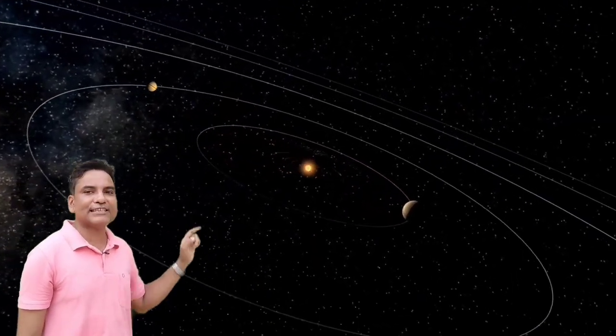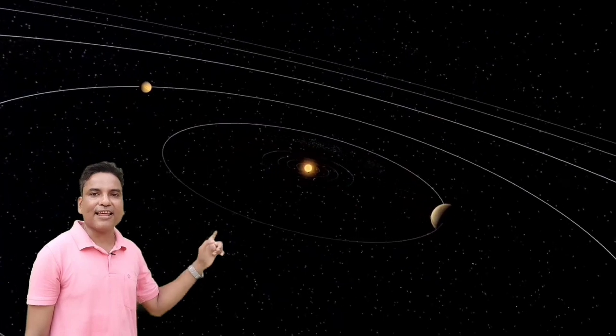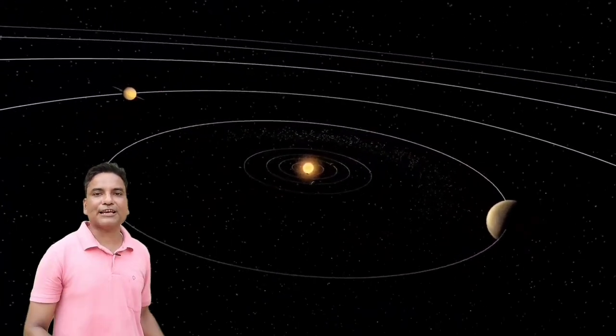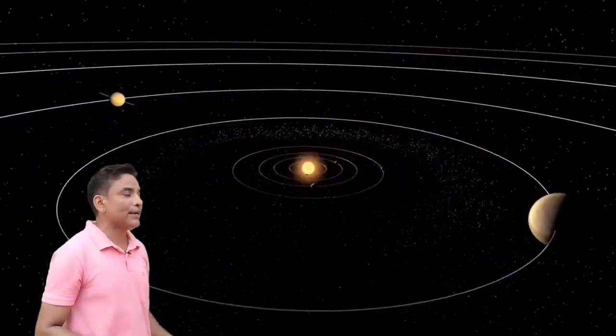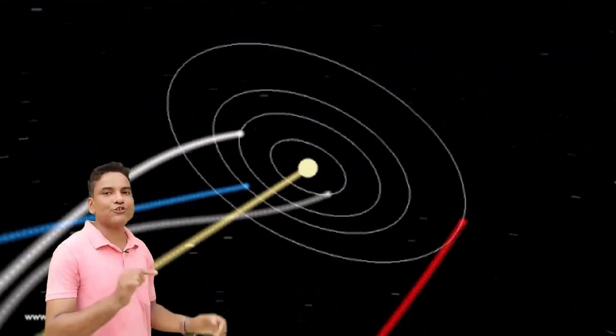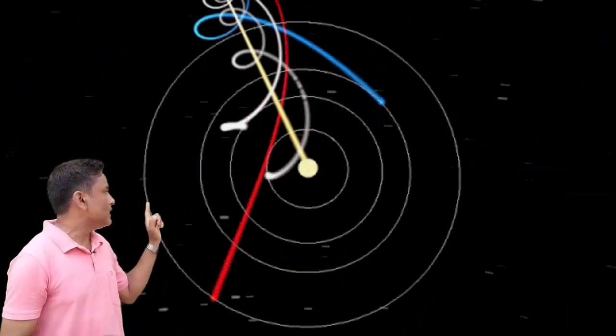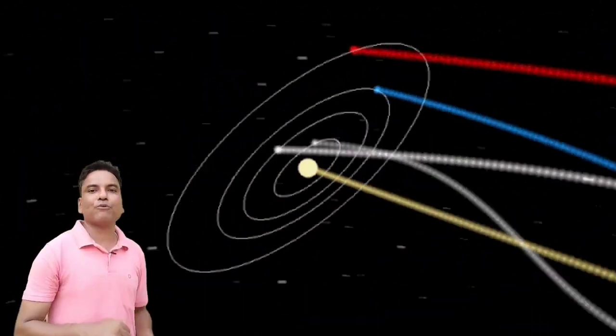Actually, our solar system does not exist in single plane like this. Our solar system makes 60 degree angle with Milky Way galaxy. Now, if we have rotated this model into 60 degrees, then we can see the actual motion of our solar system.